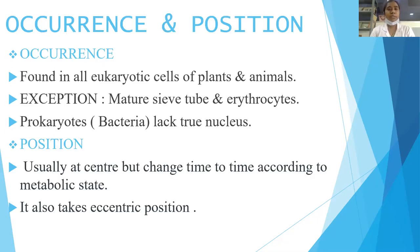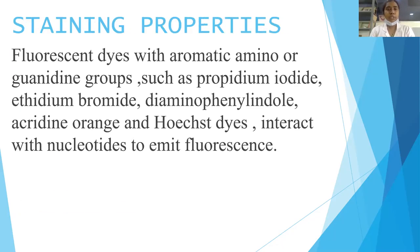Occurrence and position: the nucleus is found in all eukaryotic cells of plants and animals. Exceptions are mature sieve tubes and erythrocytes. Prokaryotes, such as bacteria, lack a nucleus. Regarding position, it is usually positioned at the center but changes from time to time according to metabolic state. It also takes an eccentric position.